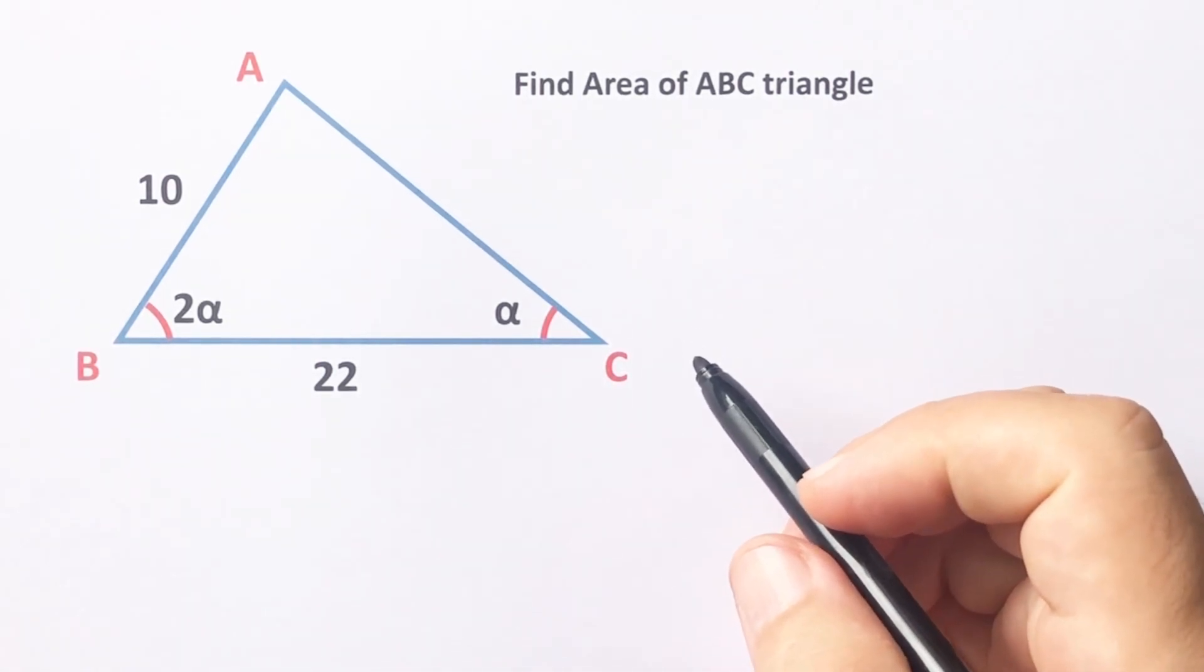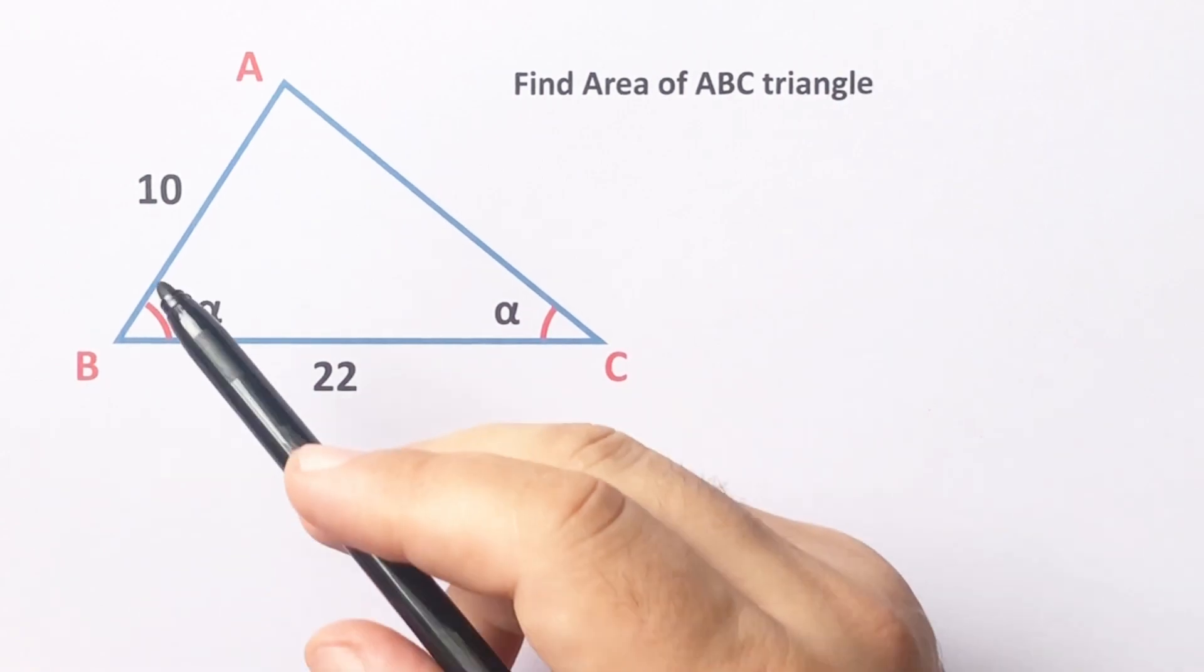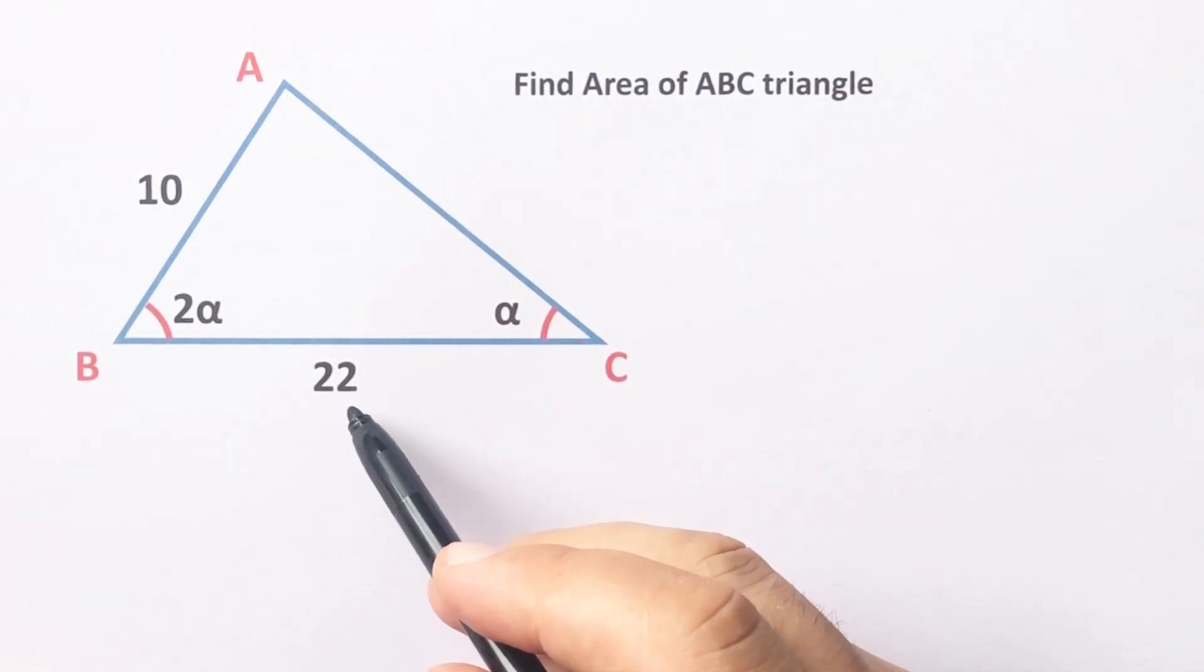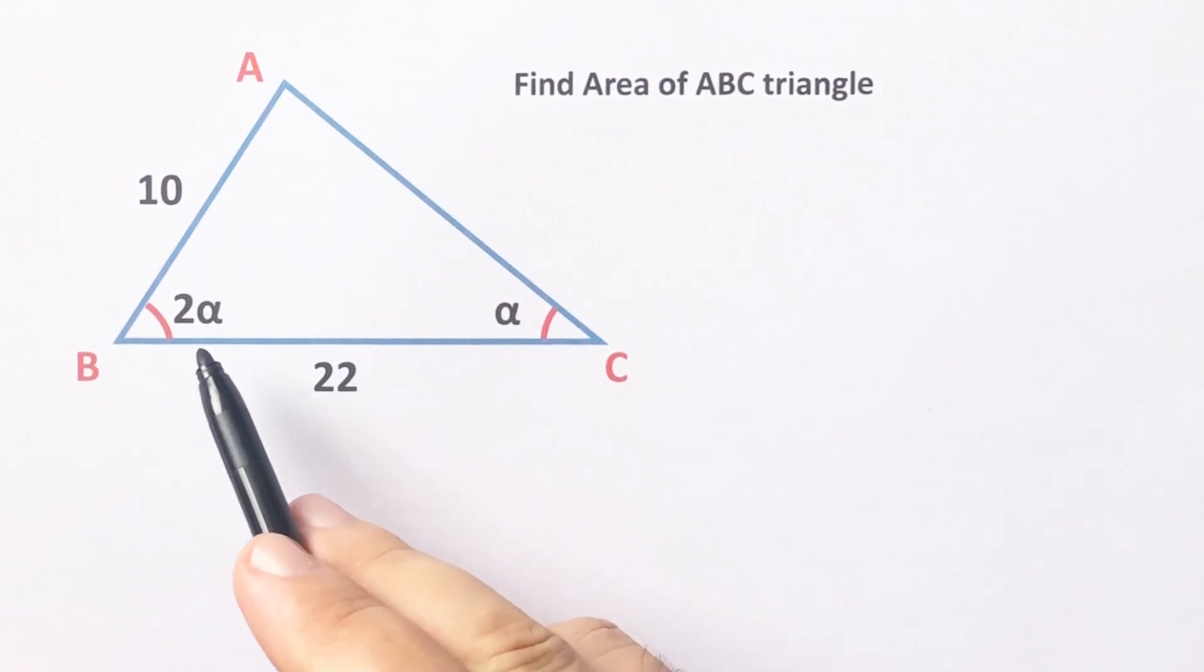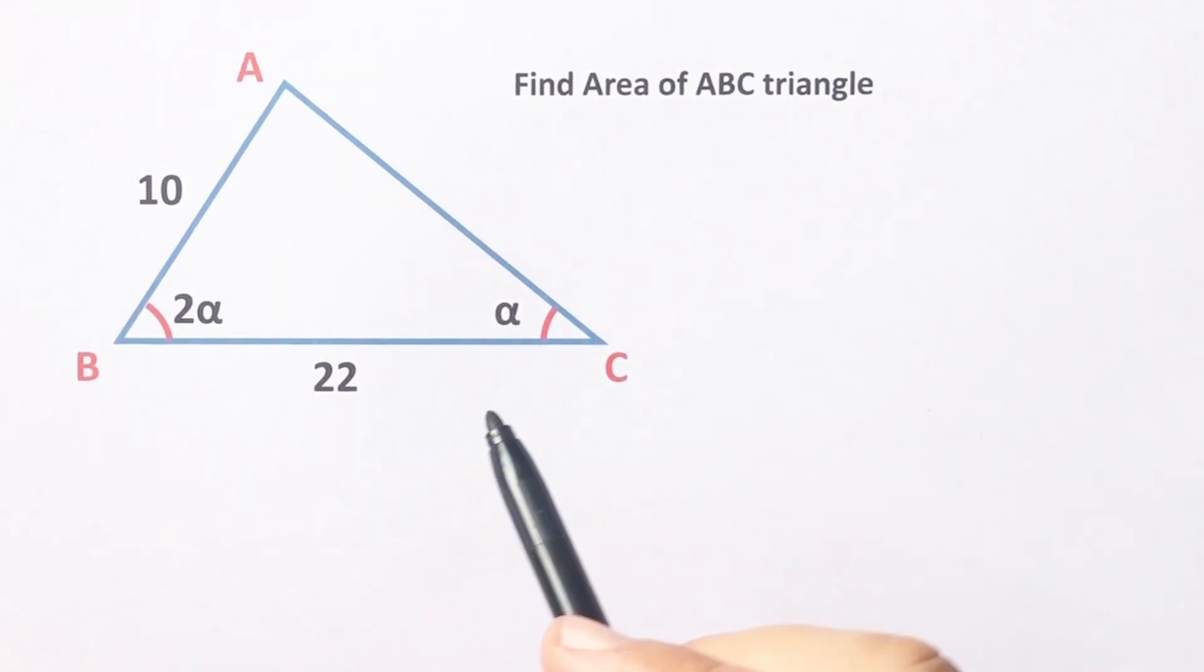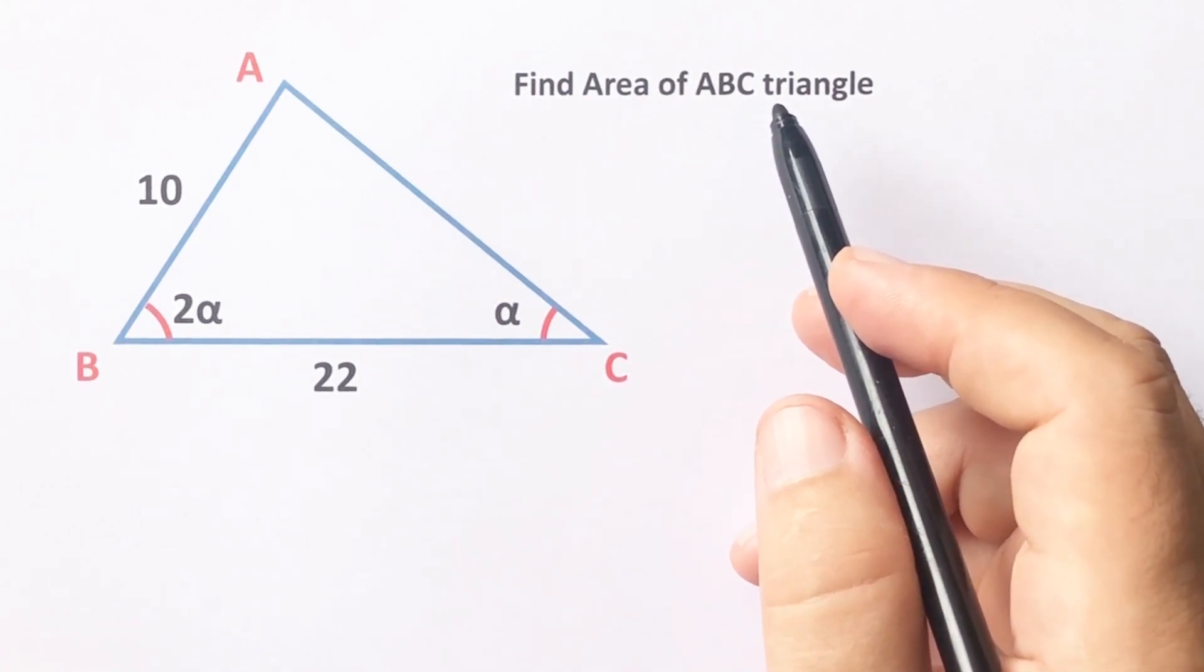Hello everyone, in this video we have one triangle and this length is 10 units, here is 22 units, and the ratio of this angle equals 2 to 1. Then the area of this triangle is asked.